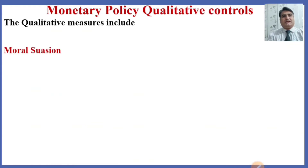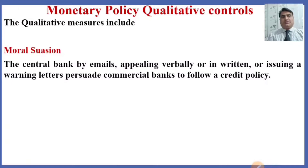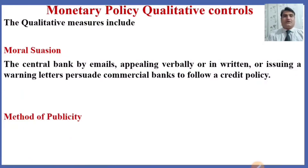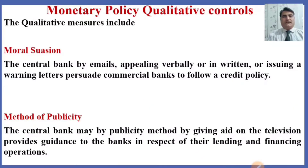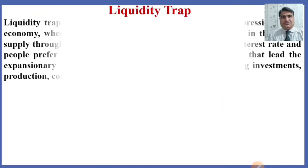The qualitative measures include moral suasion. Moral suasion means that the central bank, by emails, verbal appeals, written communication, or warning letters, persuades commercial banks to follow a credit policy. Another qualitative measure is the method of publicity, where the central bank provides guidance to banks regarding their lending and financing operations, such as by giving advisories on television.